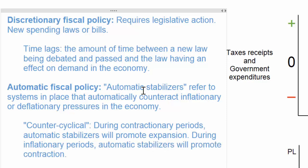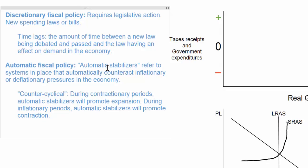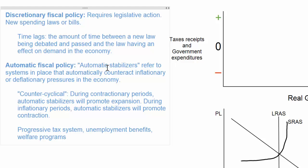Some examples of counter-cyclical automatic fiscal policies include a progressive taxation system, which will increase tax revenues as a nation's income increases without government having to change the law or initiate discretionary fiscal policy. Another example is unemployment benefits or welfare programs that provide income to people whose incomes fall below a certain level. Unemployment benefits will kick in when the unemployment rate rises – during a fall in aggregate demand, people will automatically start collecting unemployment benefits, which helps maintain the level of consumption and demand in the economy.